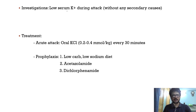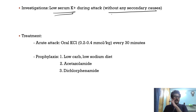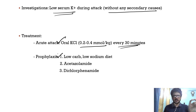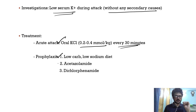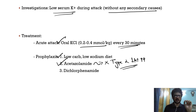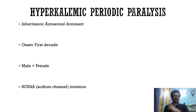During the acute attack, serum potassium is low and other secondary causes of hypokalemia must be ruled out. For acute treatment, supplement potassium — oral KCl around 0.2 to 0.4 mmol/kg every 30 minutes. For prevention: low carb and low sodium diet. Acetazolamide, a carbonic anhydrase inhibitor, is the treatment of choice for Type 1 but must be avoided in Type 2. Dichlorphenamide is another option.